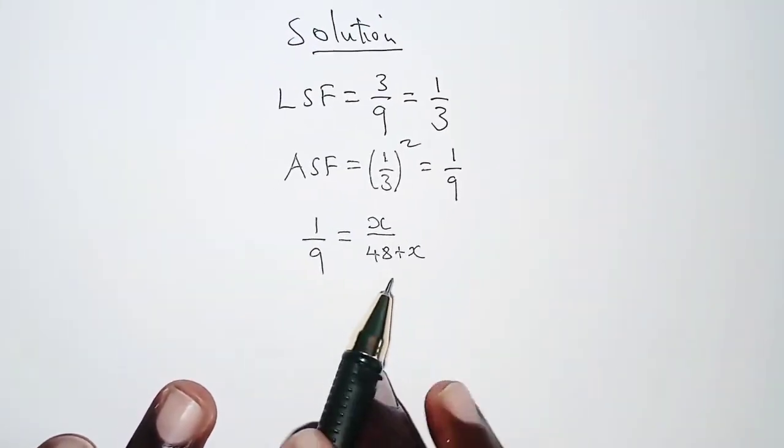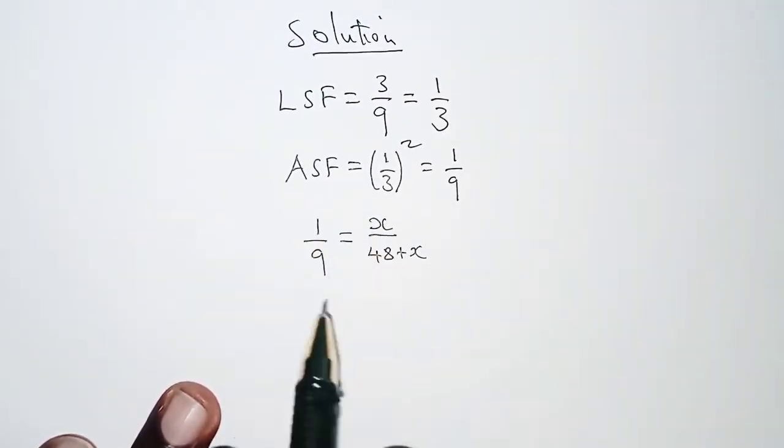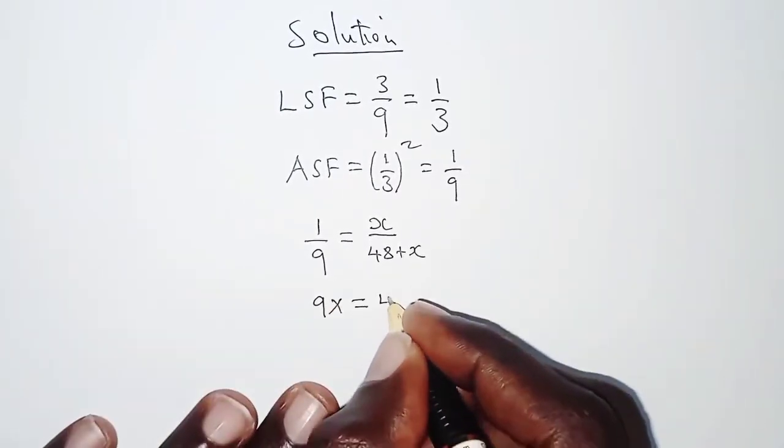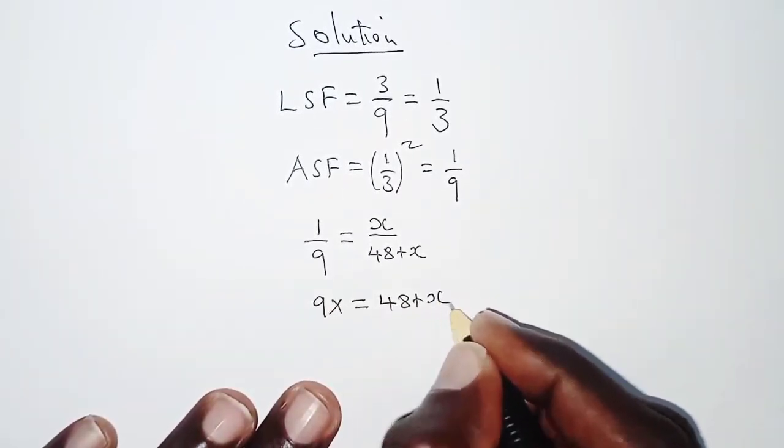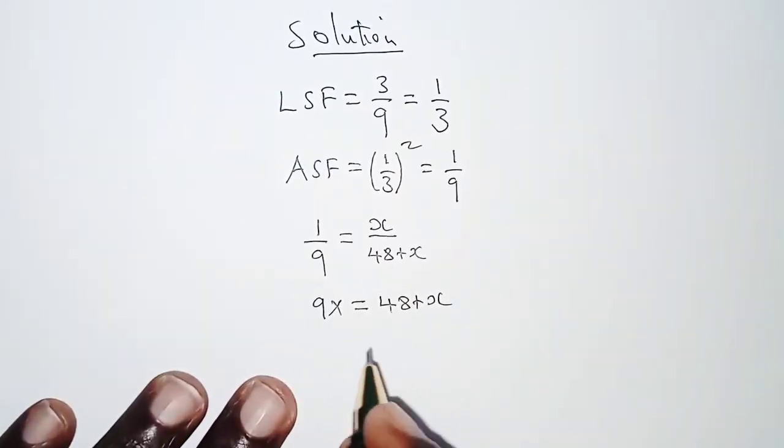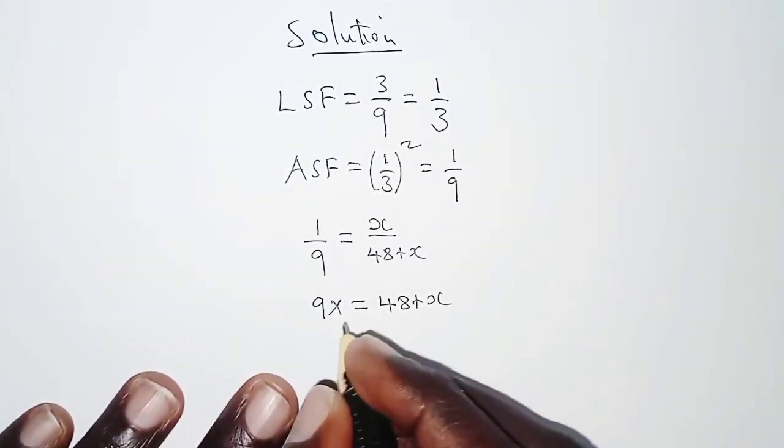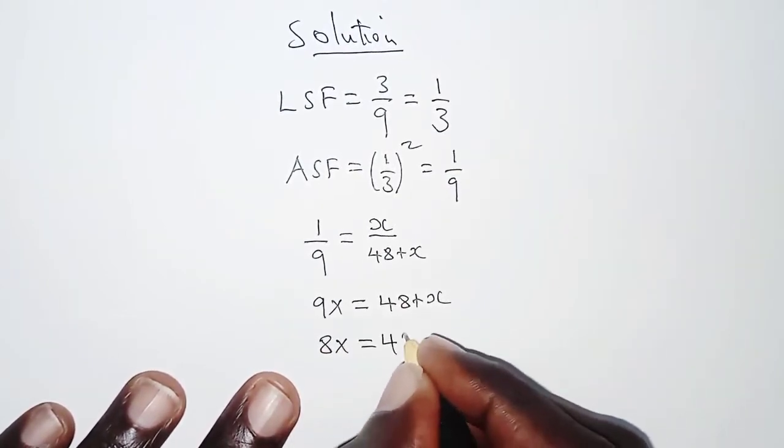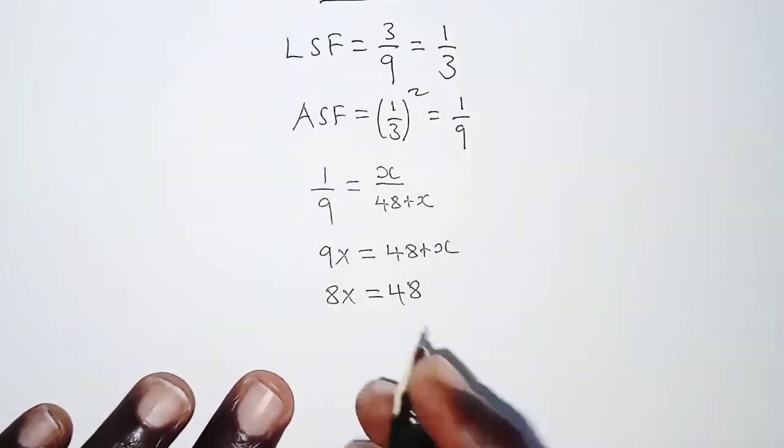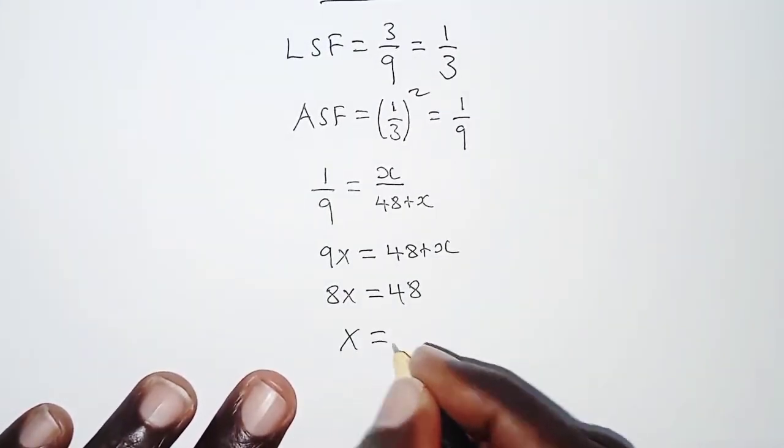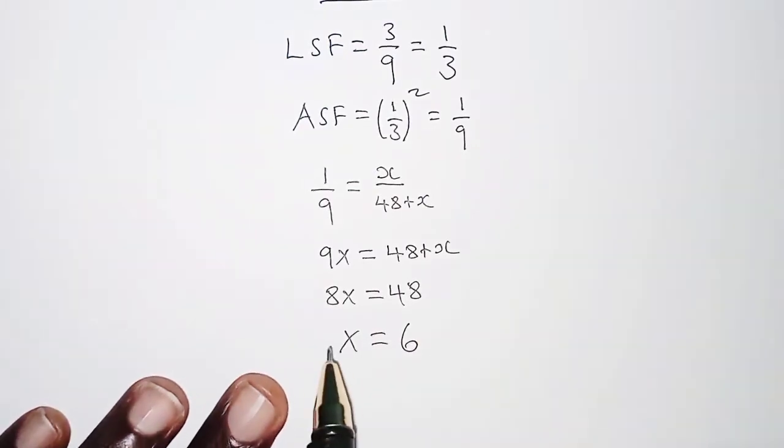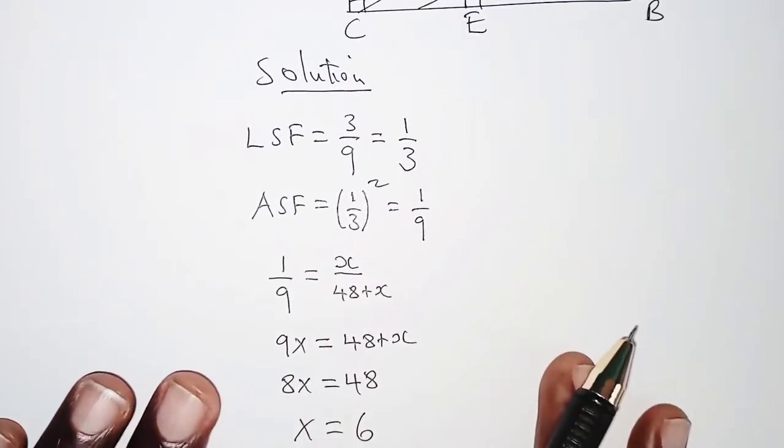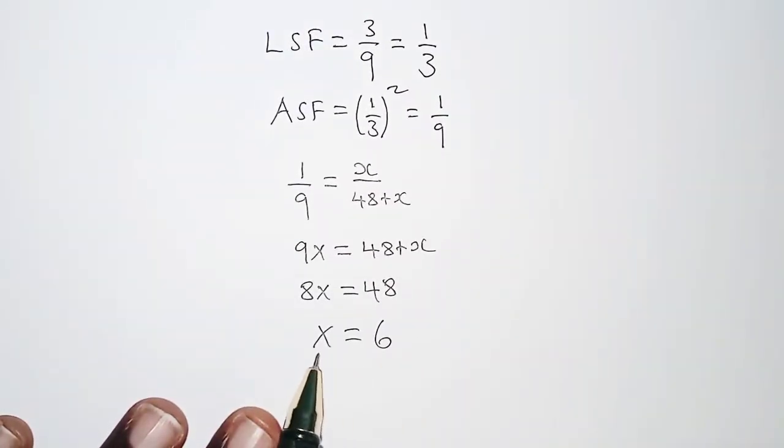From here we can get the value of x. We cross multiply, so we have 9x equals 48 plus x. So x crosses to this left hand side, we have 9x minus x, and that is 8x, which equals 48. From here, x is therefore obtained as 6, by dividing both sides by 8.